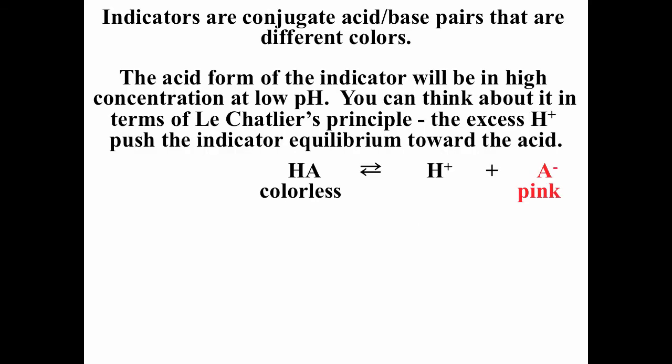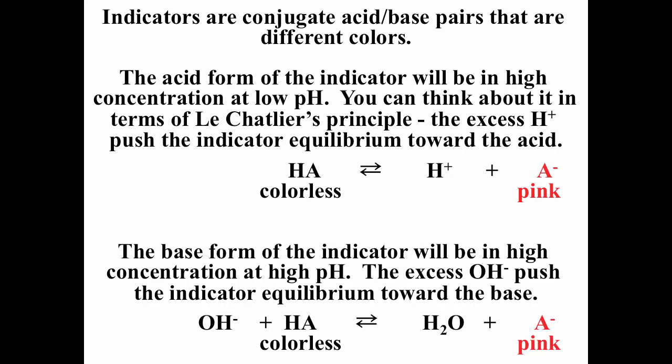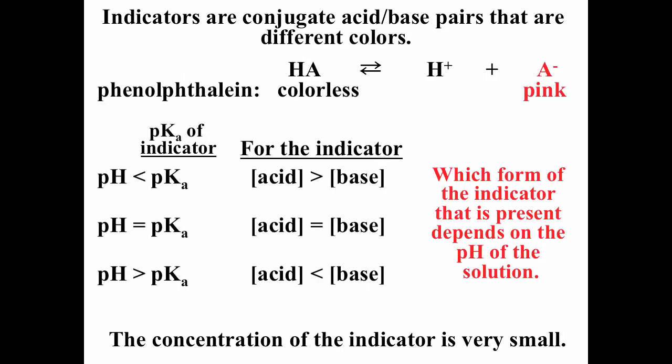You can use Le Chatelier's principle to understand this. The weak acid is in equilibrium with hydrogen ion plus the conjugate base — the weak acid is colorless, the conjugate base is pink. If you add hydrogen ion, you drive the reaction to the left, going from pink to colorless. Conversely, if you add hydroxide, you drive the reaction to the right, going from colorless to pink. The indicator is only added in a couple of drops during a titration, so it doesn't really affect the pH, but the pH of the solution affects which form of the indicator is present.